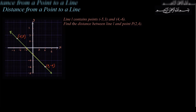The question states — and this is actually from your textbook, page 196 — line L contains points negative 5, 3 and 4, negative 6. I've actually drawn this particular line, line L, lowercase L over here, and if you recall in geometry, we label lines with lowercase letters as well.